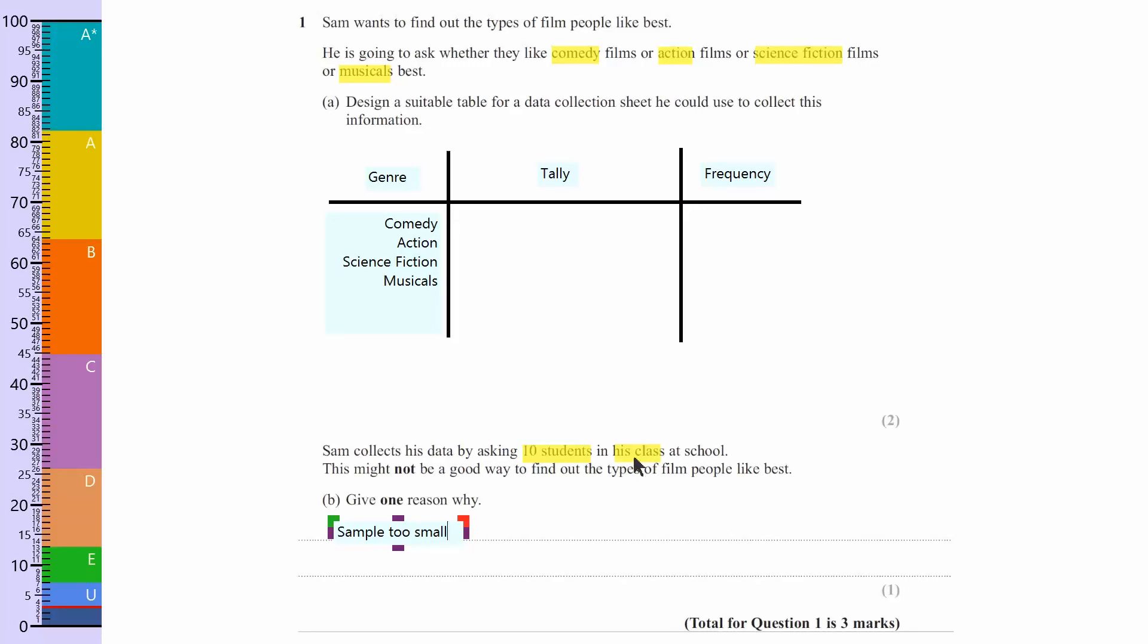You could also say that they're in his class, so it could be biased. They're all the same age, or it's the same school. And there's quite a few different answers that you could have for that.